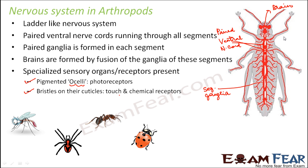Insects also have bristles on their cuticles — the outer covering of the insect's body — which serve as touch and chemical receptors, functioning as both tangoreceptors and chemoreceptors. This is why if you apply a chemical to an insect's body, it will immediately react and respond, because it has these receptors distributed across its cuticle.